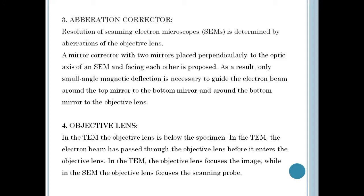The next part is the objective lens. In the SEM, the objective lens lies above the specimen, while in the TEM it is below the specimen. The SEM objective lens is the last lens in the series that creates the electron beam and scans the specimen, focusing the scanning beam to a very small spot. In the TEM, the electron beam passes through the specimen before entering the objective lens, where it focuses the image. In the STEM, the objective lens focuses the scanning probe. These lenses share the same name because they serve comparable functions in creating focus on the specimen, though they carry out focusing in different ways.